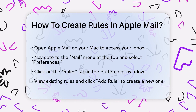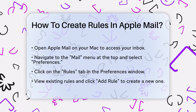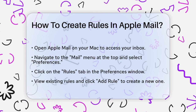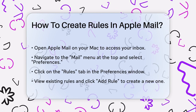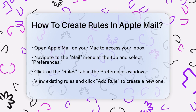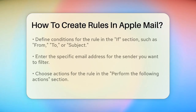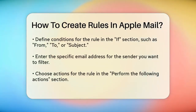Here, you'll see a list of any existing rules you've created, as well as a button to add a new rule. Click on Add Rule to start creating a new one. You'll see a window where you can define the conditions and actions for your rule.